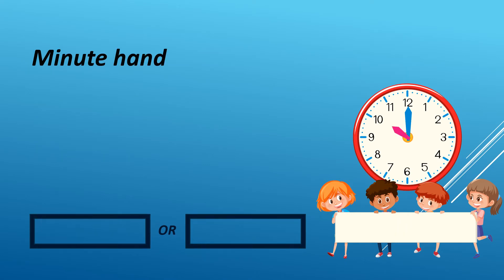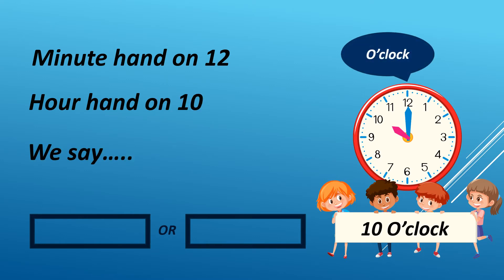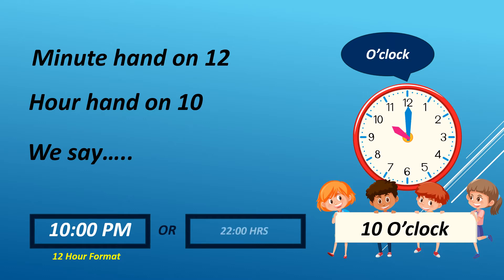Minute hand is on 12, hour hand is on 10 — we say 10 O'clock. It can either be AM or PM. For example, it is 10 PM in 12-hour format. We read it as 2200 hours in 24-hour format.